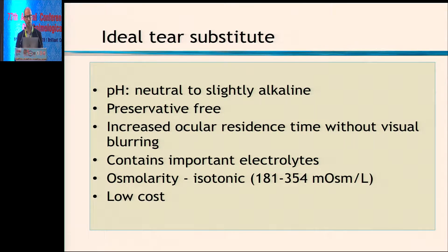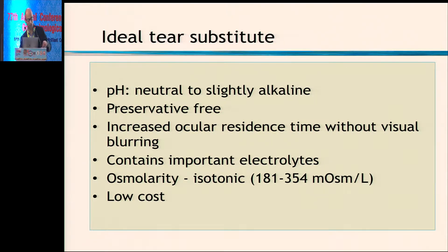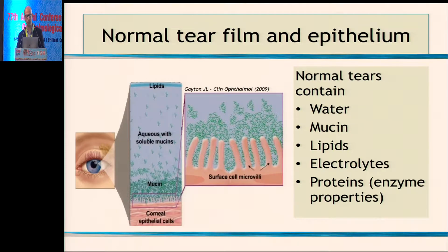An ideal tear substitute has a pH that is neutral to slightly alkaline, is ideally preservative-free, has a longer contact time with the cornea without causing blurring, and contains the important electrolytes necessary for tears. Osmolarity-wise, it should be isotonic between 181 to 354 or hypotonic. And ideally it should be low cost, which in a country like ours is very important, especially since many dry eye patients have long-term need of therapy.